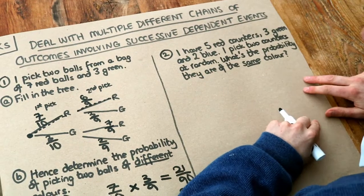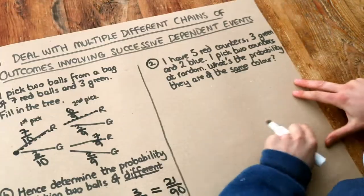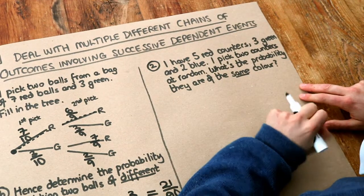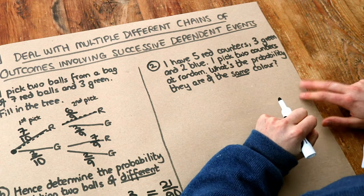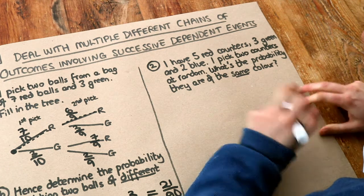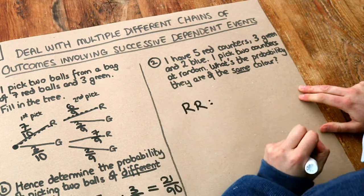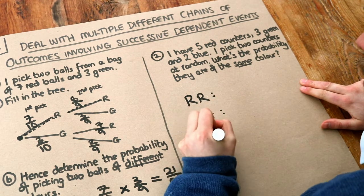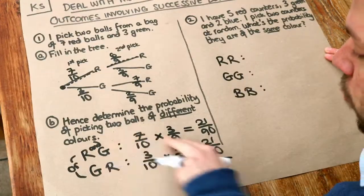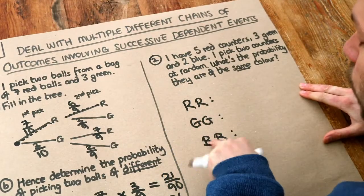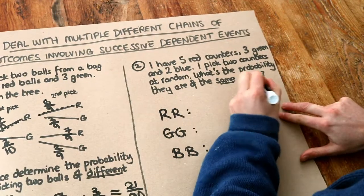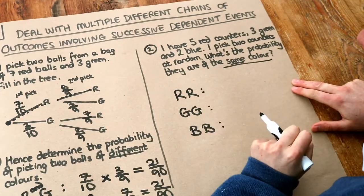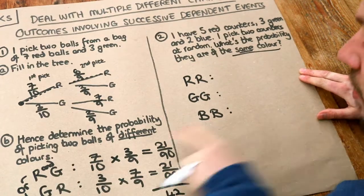The second question demonstrates that we don't need a tree to do this approach. I have five red counters, three green, and two blue — I pick two counters at random. What's the probability they have the same colour? For two picks with the same colour, we could have red and red, green and green, or blue and blue. We list out all the matching sequences of outcomes and proceed exactly as before.